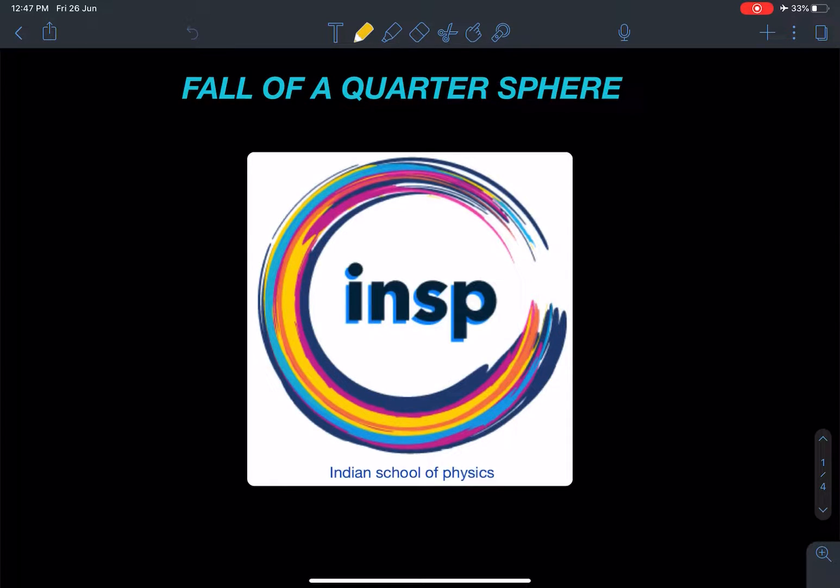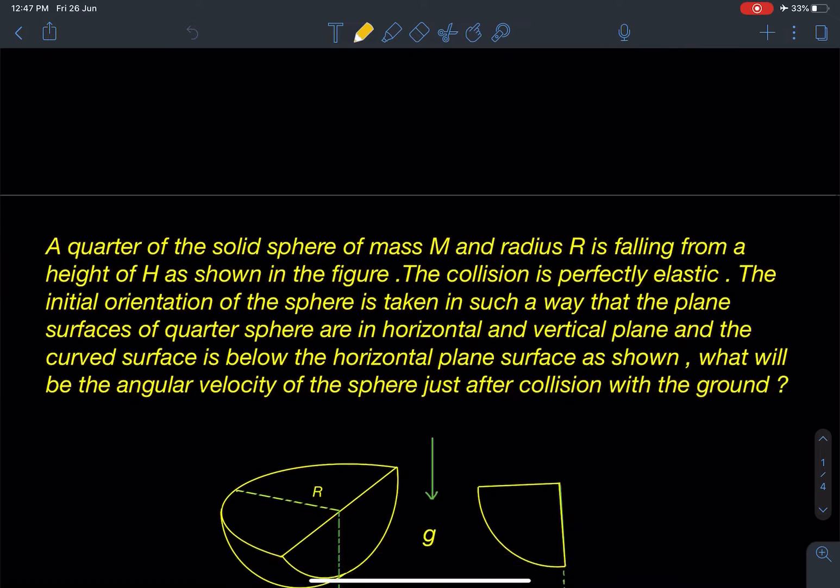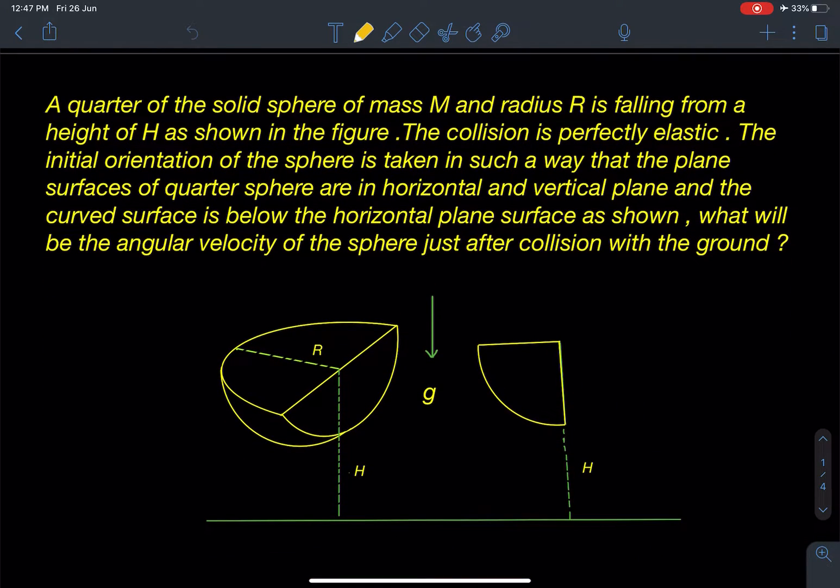Let's go to the statement of this particular problem. Here it is given a quarter of the solid sphere of mass m and radius R is falling from a height h as shown in the figure. The collision is perfectly elastic.